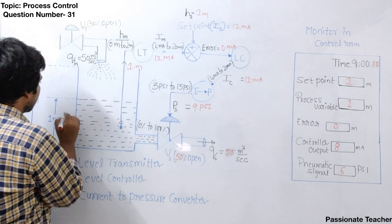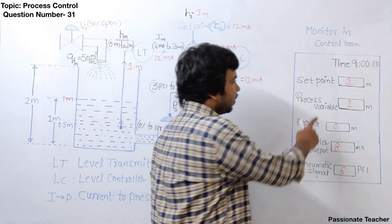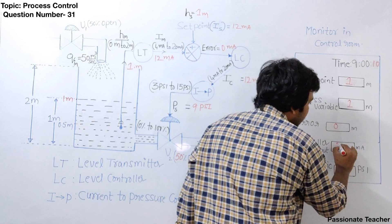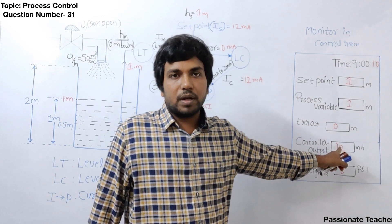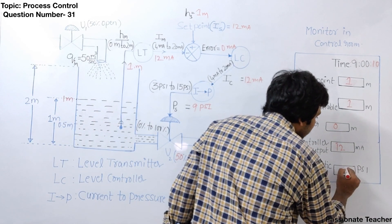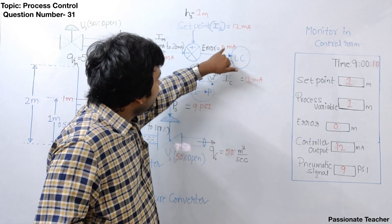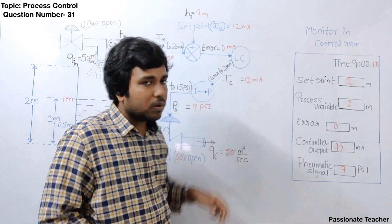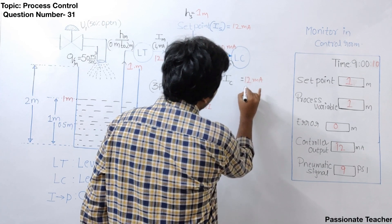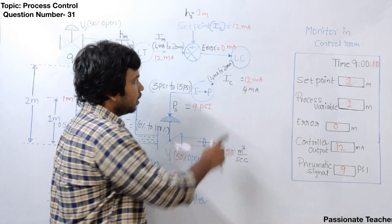The water level will stop exactly at 1 meter when both flow rates are equal. At that point, when the process variable equals 1 meter and the error is 0 meter, the controller output is 12 milliampere. Students often ask: why should the level controller generate 12 mA when the error is zero? Let us consider what would happen if the error is zero and it generates only 4 milliampere instead.